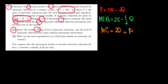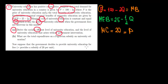In part A, we derive the socially efficient level and the level of university education that arises without government intervention. For the socially efficient level, we think about the benefit and cost to the entire society. We have the marginal private benefit given by the demand curve - the price at which we sell education is our marginal private benefit. We also have the marginal external benefit, which is the additional benefit to society from more educated people, plus the marginal cost.